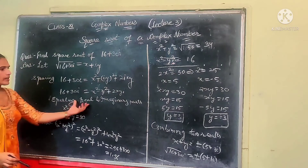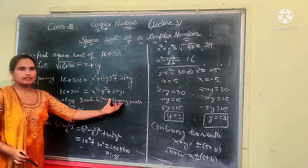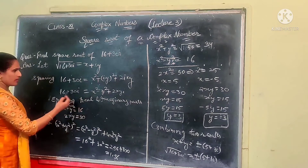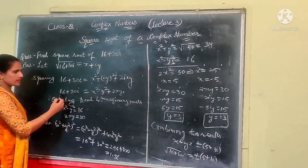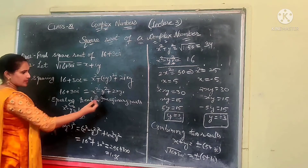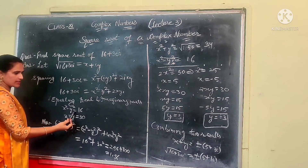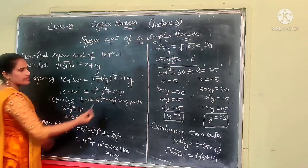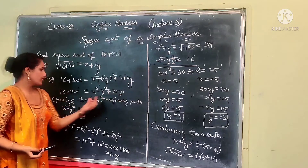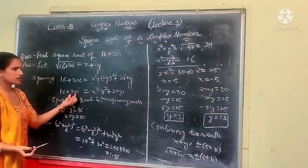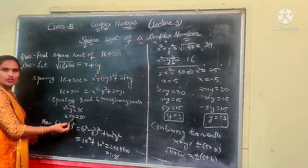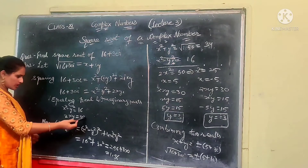Now, equating real and imaginary parts: the real part gives us x squared minus y squared equals 16, and the imaginary part gives us 2xy equals 30.